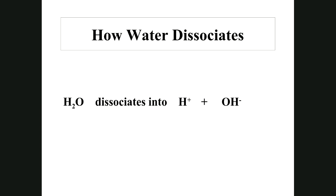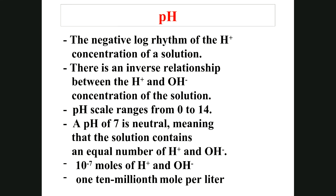Water dissociates into hydrogen ions (H⁺) and hydroxyl ions (OH⁻) — that's the standard accepted way water comes apart. Hydrogen is a cation (positive) and hydroxyl is an anion (negative). pH is defined as the negative logarithm of the hydrogen ion concentration of a solution — we won't get deep into logarithms, but there is an inverse relationship between hydrogen ion and hydroxyl ion concentrations.